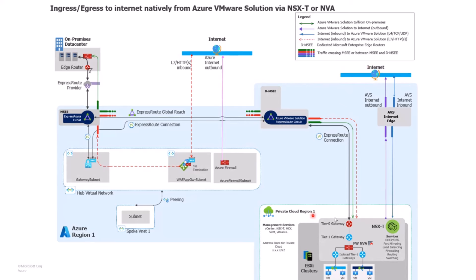When it comes to our internet outbound, from an AVS perspective, we're going to exit out to our AVS Internet Edge and directly out to the internet. Inbound traffic is going to come in through our internet, within our AVS Internet Edge, and directly to AVS. Does that traffic between AVS and Azure remain the same?